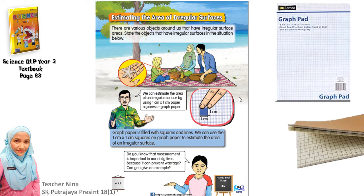All right, now we can estimate the area of an irregular surface by using a 1 cm by 1 cm paper squares or graph paper. Okay, so today you will be introduced to this graph paper. We usually see the lines of graph papers in blue or sometimes green and I have also seen red. So, it can come in many colors but usually it is only one color. Okay, so if we measure the squares on the graph paper, it is actually 1 cm long and 1 cm wide. So, graph paper is filled with squares and lines. We can use the 1 cm by 1 cm squares on graph paper to estimate the area of an irregular surface.